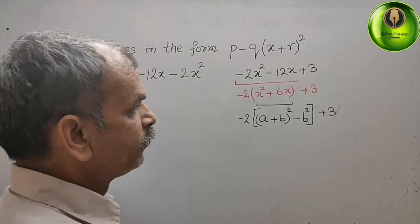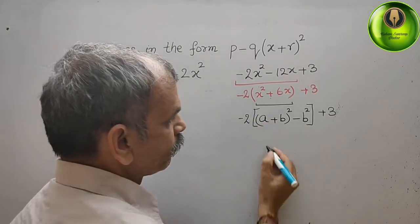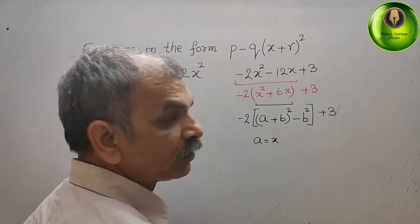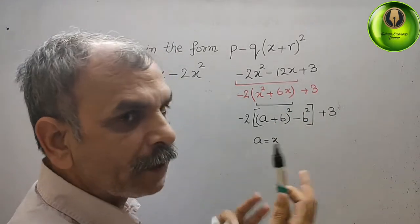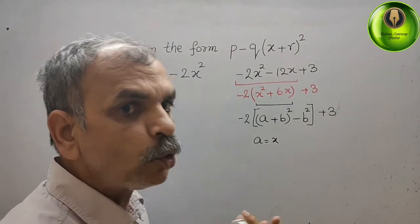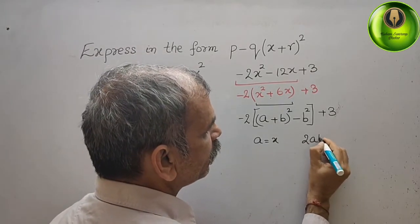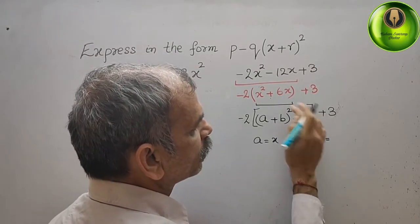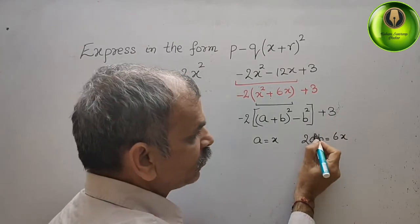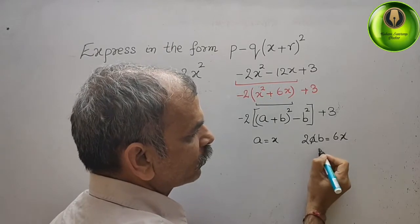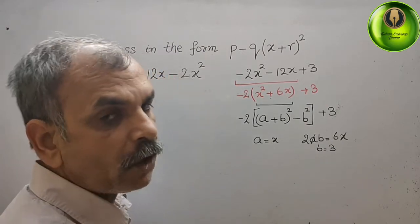Now, a is your x. This term 6x is a combination of a and b, so that is your 2ab. So 2ab equals 6x. Since a is x, we can say b equals 6 divided by 2, which is 3.